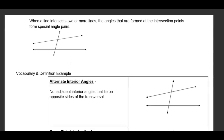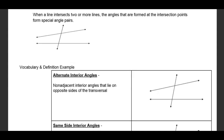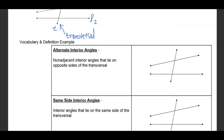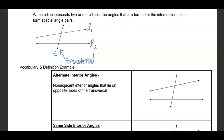This is where things start to get fun. When a line intersects two or more lines, the angles formed at the intersection points form special angle pairs. So this is line one, this is line two, and this line here is called the transversal — a line that intersects two other lines. Let me number the angles: 1, 2, 3, 4, 5, 6, 7, 8. We're going to use those numbers to reference all these angles.